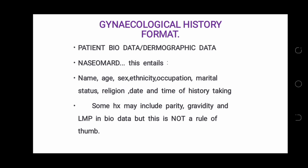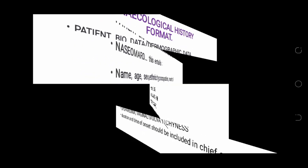Patient bio data includes name, age, sex, ethnicity, occupation, marital status, religion, and date and time of history taking. Some histories may include parity, gravity, and last menstrual period in bio data, but this is not a rule of thumb.